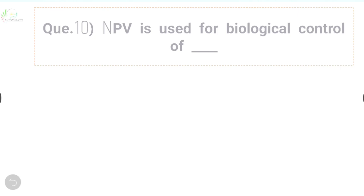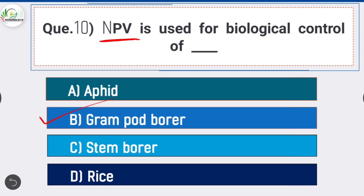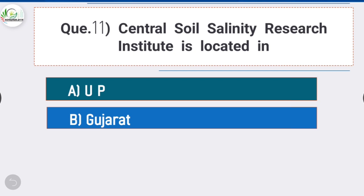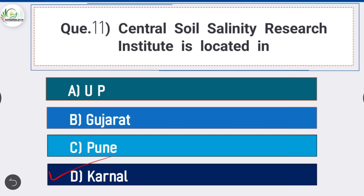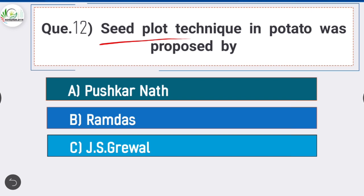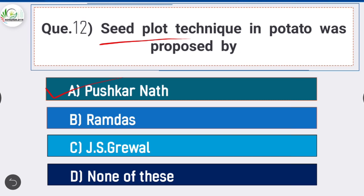Question number ten: NPV is used for the biological control of - answer is option B - gram pod borer. Nuclear Polyhedrosis Virus is used for the biological control of gram pod borer. Question number eleven: Central Soil Salinity Research Institute is located in - answer is option - Karnal. Question number twelve: seed flower technique in potato was proposed by Kush Karnal.